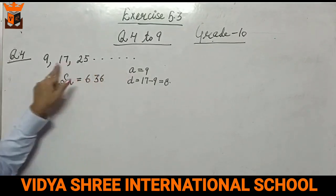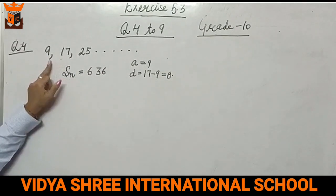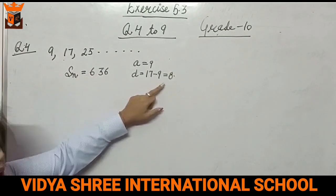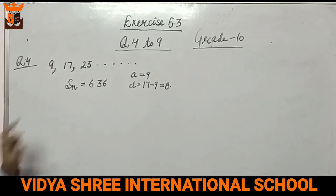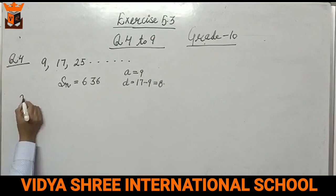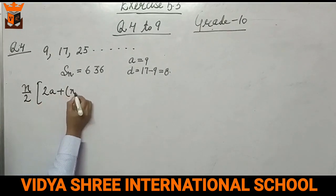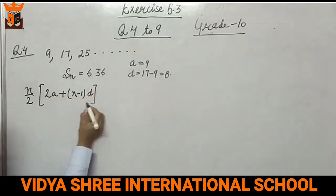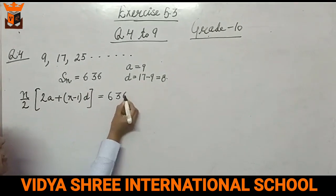So first term is a. First term is 9. And what is d? Common difference. 17 minus 9, that is 8. Sn is given as 636. So what is the formula? n by 2, 2a plus (n minus 1) into d. You already know about this formula. So this is equal to 636.